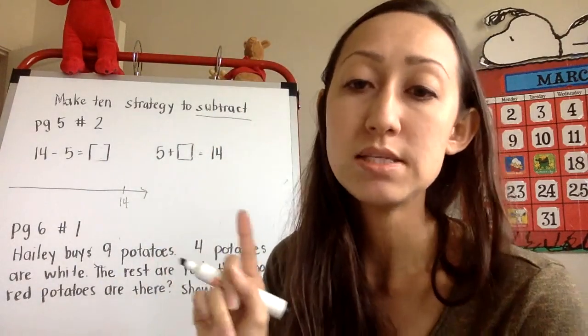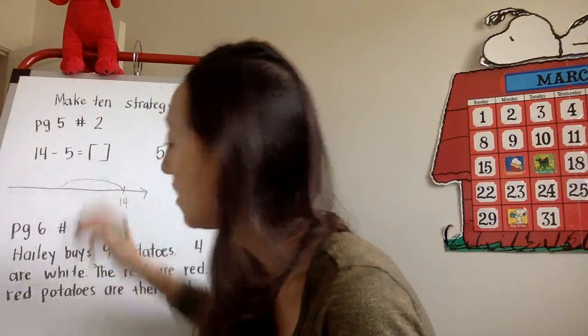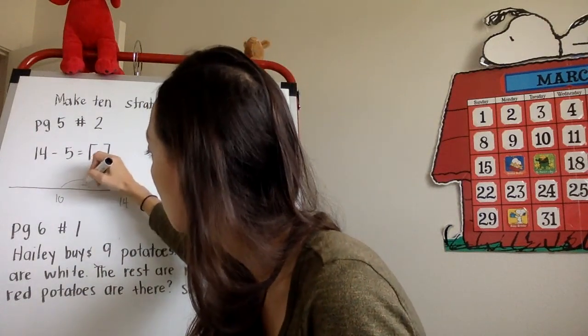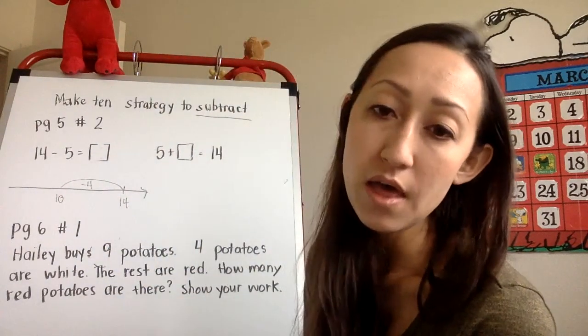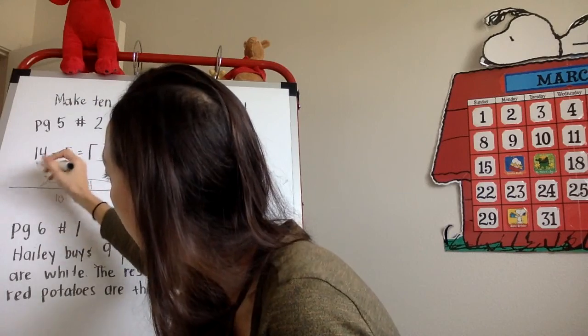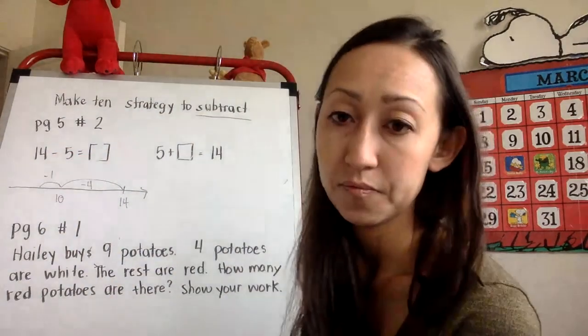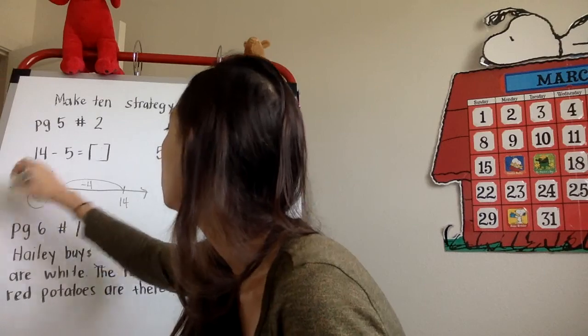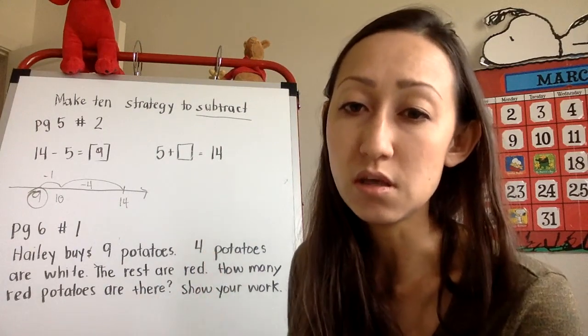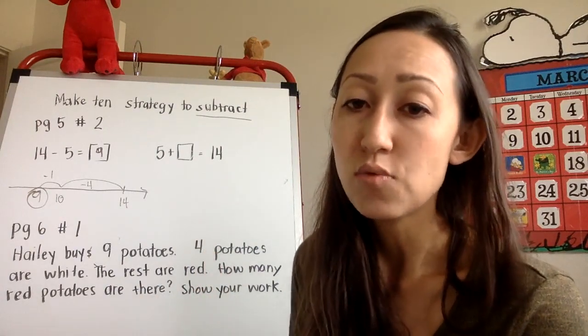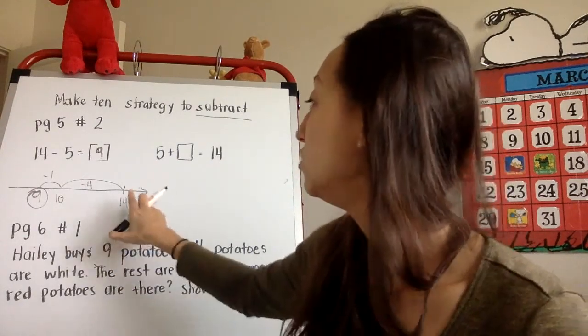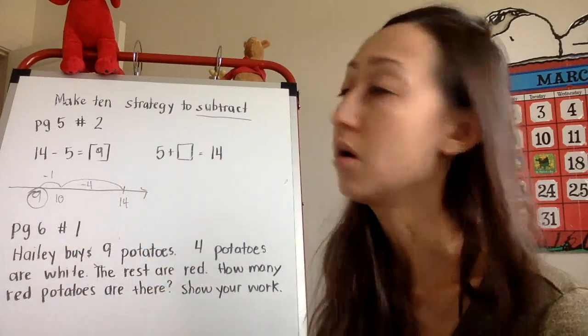How much do I have to subtract to make 10? It looks like that is four, so minus four. Then I still got to subtract the rest so that I am subtracting the right number, which is five, so I'm going to minus one now. And then my answer is nine. So I want you to show it this way today when you're doing your work because I really want you to practice the skill of using make 10. So rather than putting 14 in your head and just counting back down five, I want you to go 14 minus four and then minus one more.